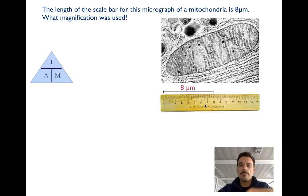I take my ruler and I measure the scale bar. So now my I, my image, is using that ruler. I measure that image and that's 8 centimeters. Actual is always the smaller number. So that's my 8 micrometers across this scale bar.